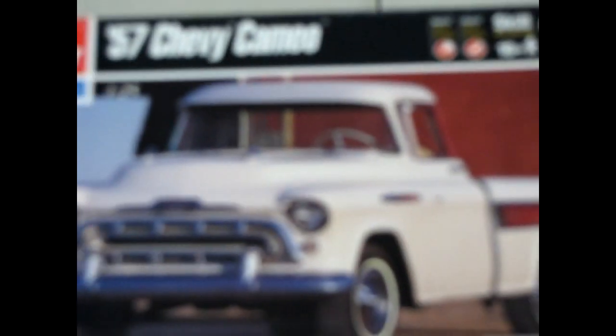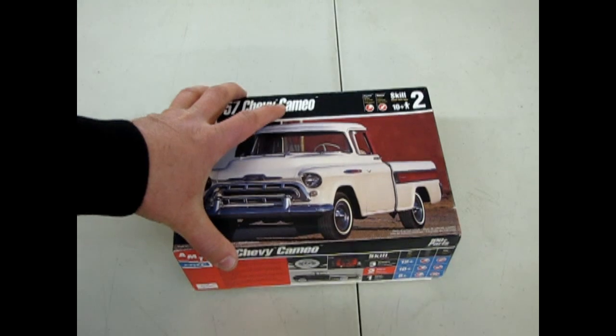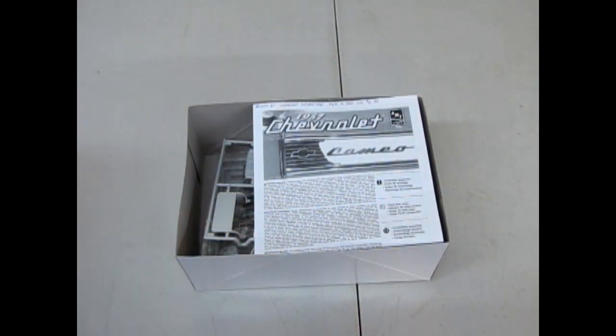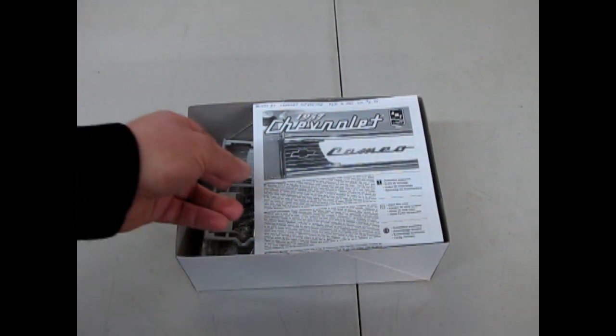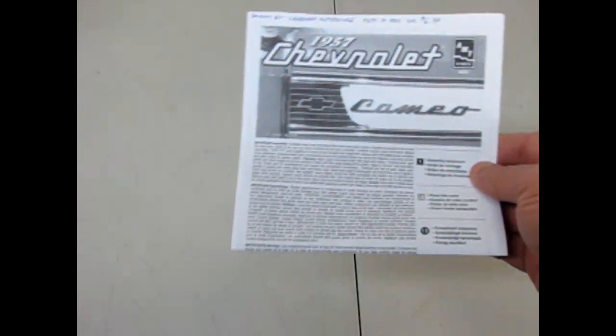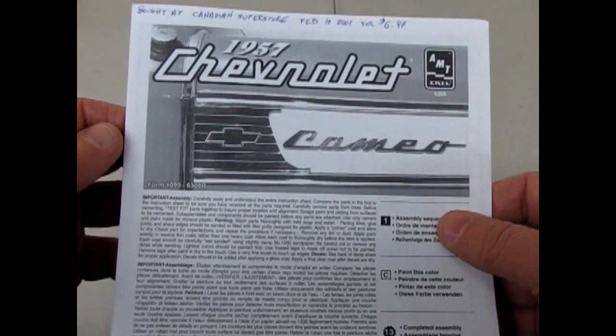Welcome back to another truck video. We have the 57 Chevy Cameo truck from AMT Ertl, and this kit came out in 1998 from the company. This is one of those where they were competing with Revell Monogram to see which company could build a better, more detailed model kit. So these trucks are a real treat.